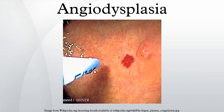With pill enteroscopy, a pill that contains a video camera and radio transmitter is swallowed, and pictures of the small intestine are sent to a receiver worn by the patient. Recently, multiphase CT angiography has been shown to play a promising role in the diagnosis of small and large bowel angiodysplasia, especially when associated with active haemorrhage.